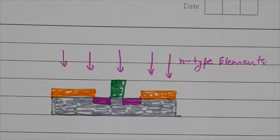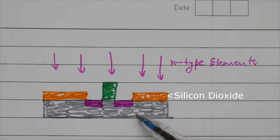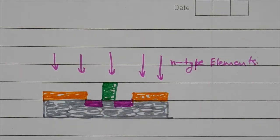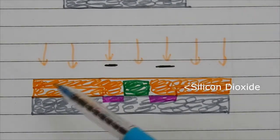The next step is to add n-type elements. When the n-type elements react with silicon, they deposit in between. We again mask the system with light and add silicon dioxide.